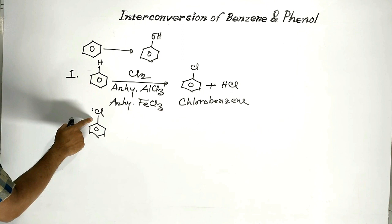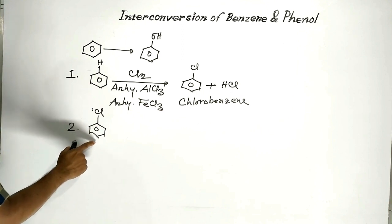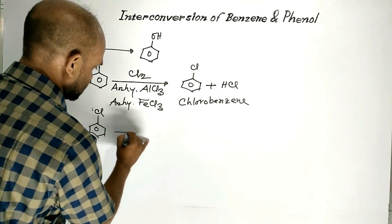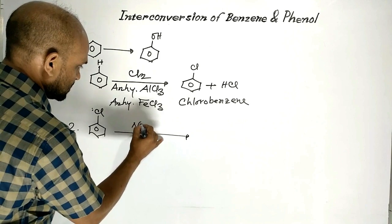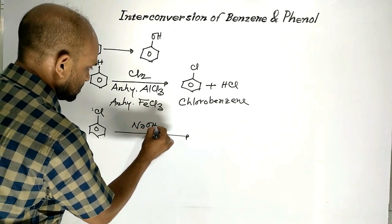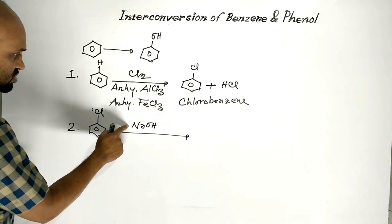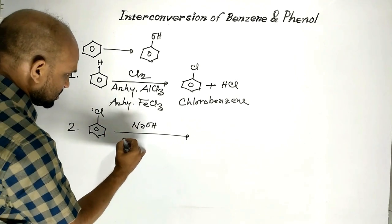Because of the resonance structures, chlorobenzene is a stable compound. For this reason, when chlorobenzene is treated with sodium hydroxide, drastic condition is required.